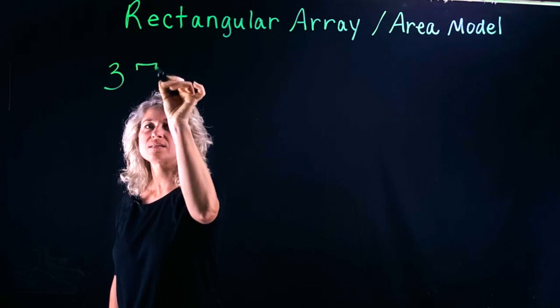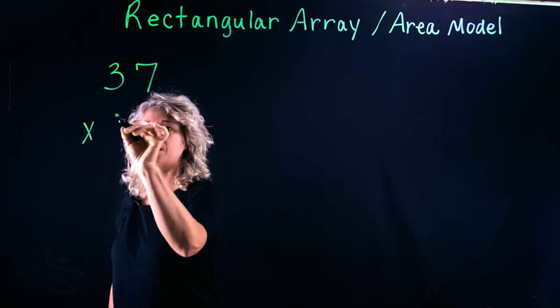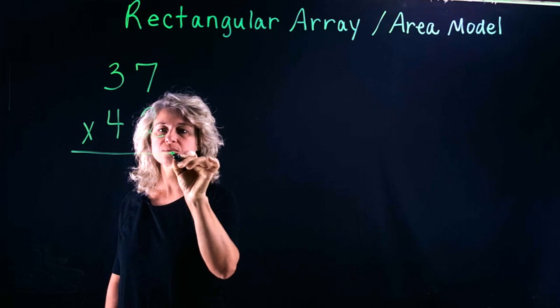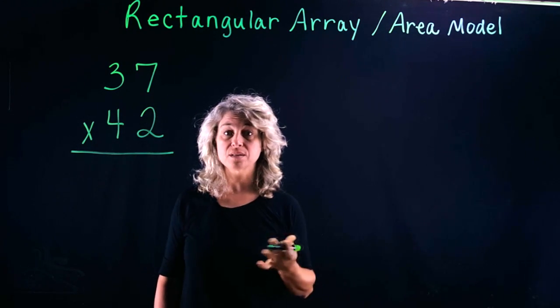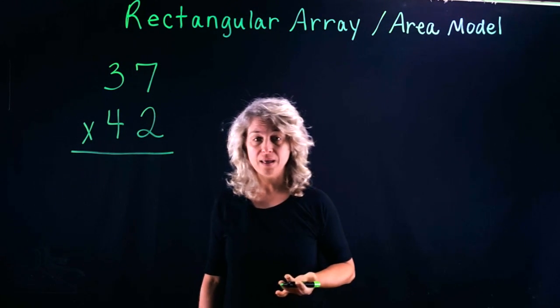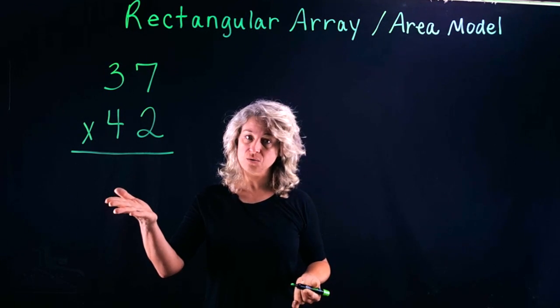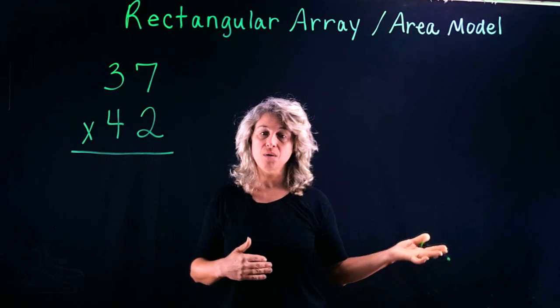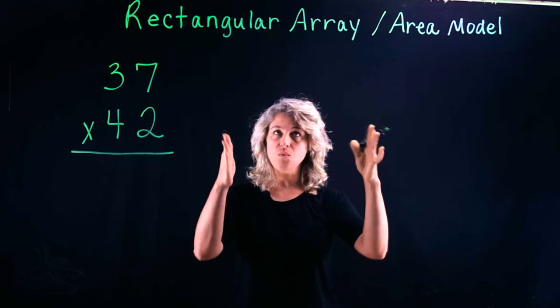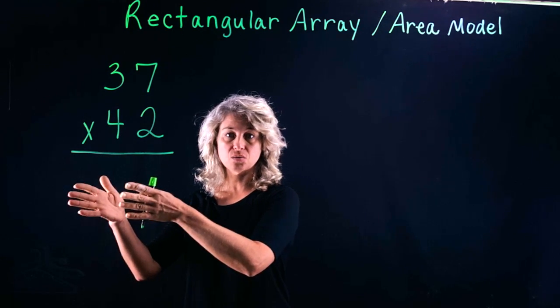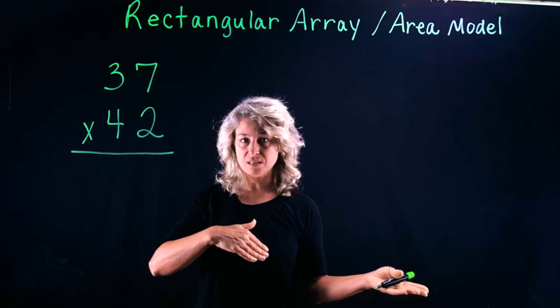Let's take a multiplication problem: 37 times 42. Now we could work this out the standard way, and if you've already watched the turtle method, you could work this out using the turtle method. In a moment, after I show you this new way, we may want to come back and check it using the turtle method to see if we get the same answer.